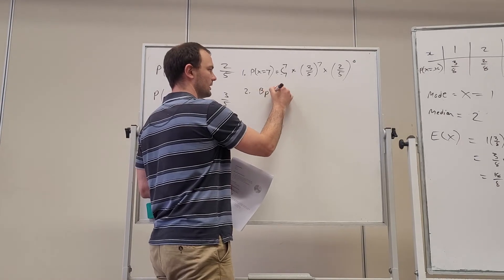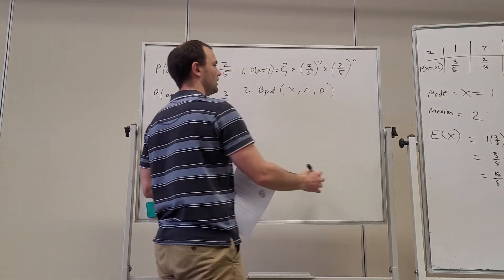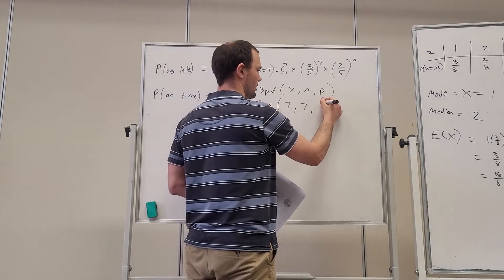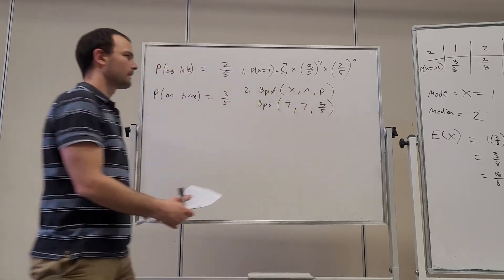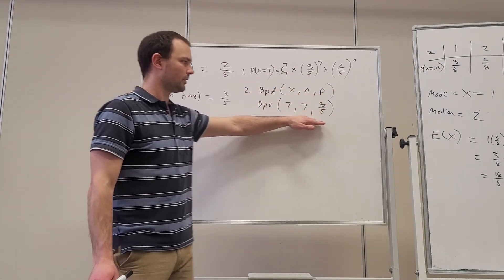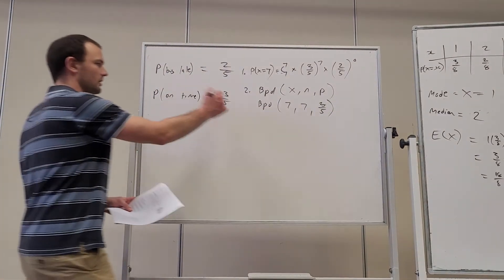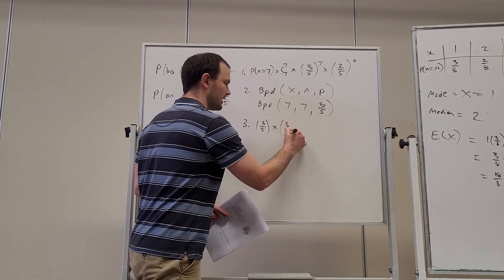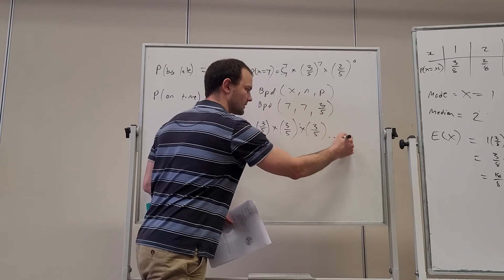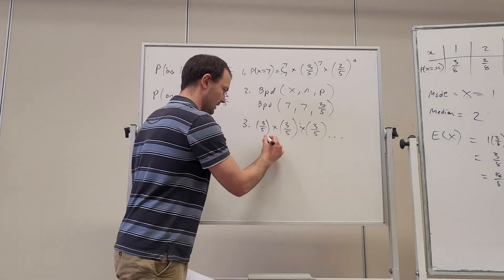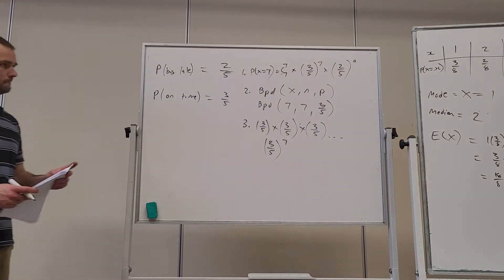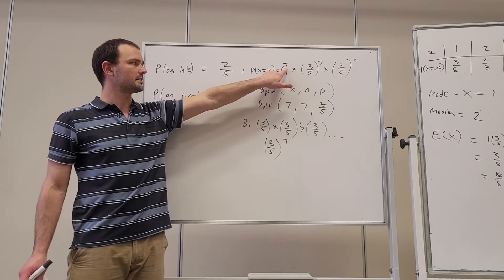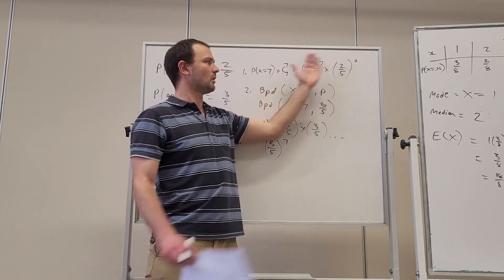The first is the binomial formula: C(7,7) × (3/5)^7 × (2/5)^0. That's seven successes from seven trials, times the probability of success to the power of the number of successes, times the probability of failure to the power of the number of failures. Procedure number two would be to go into our calculator's BPD with X = 7, N = 7, P = 3/5. The third procedure would be: the probability of being on time on day one is 3/5, and the second day 3/5, and so on — so it's just (3/5)^7. Notice the relationship: C(7,7) is just one, and (2/5)^0 is also one, so all three procedures give exactly the same answer.